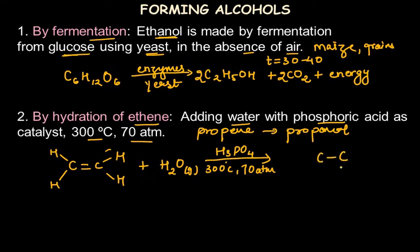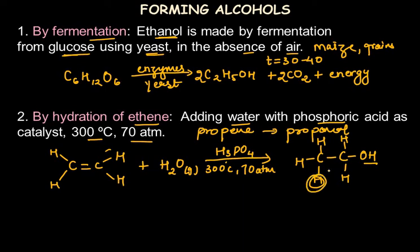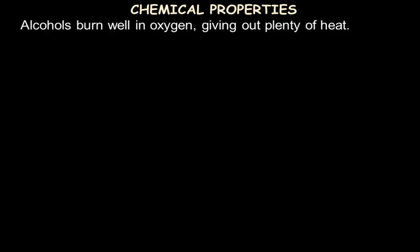The double bond in ethene changes to a single bond as one hydrogen and one OH are added across the double bond — this is how water is added to an alkene to form an alcohol. Using ethene gives ethanol; using propene gives propanol. These are the two main methods of producing alcohols. Now let's move to the chemical properties of alcohols.